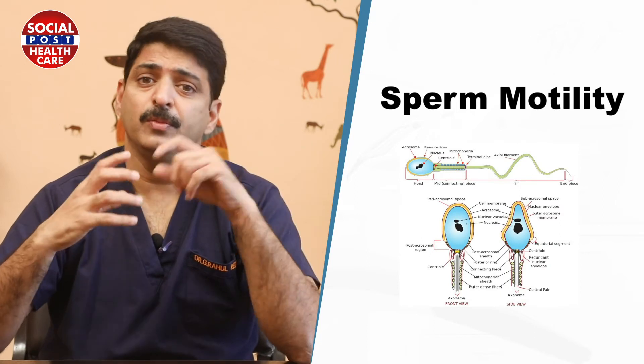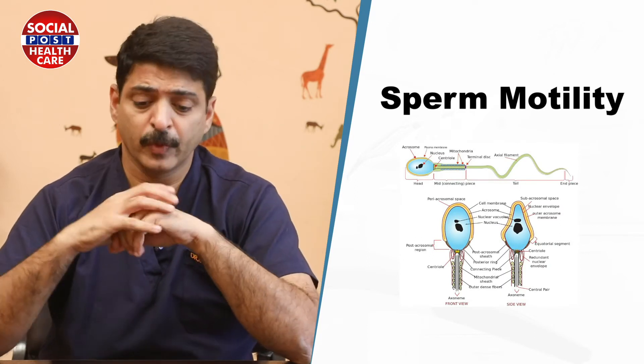And the fourth cause is any heat increase in testicular temperature, either because of tight undergarments, working in heat environments, or some problems like varicocele where there is excessive heat in the testes, which can lead to low sperm motility.